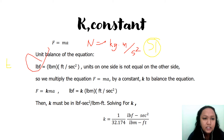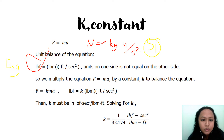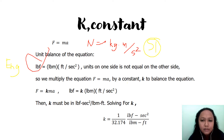We need the constant k to balance the equation because in SI it is already balanced — one newton equals one kilogram-mass per second squared. In English units, one pound-force equals one pound-mass times 32.174 feet per second squared. So we need to find the unit of this constant k to balance the units.